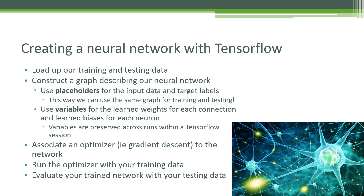We will then run our optimizer using our training data, and finally evaluate the results of our trained network using our test data set. At a high level: we create a network with a given topology, feed it training data, use gradient descent to converge on the optimal weights between each neuron, and then evaluate the performance of this network using a test data set it's never seen before to see if it can correctly classify that new data.